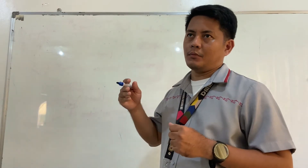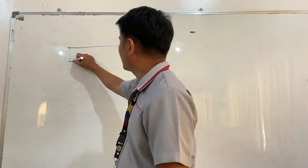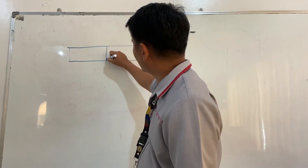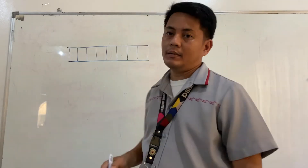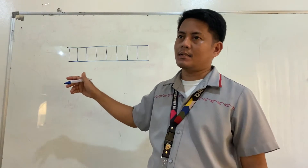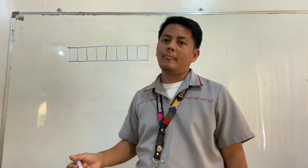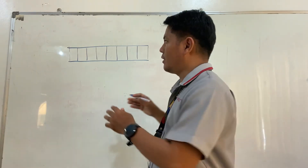Now we are going to demonstrate how to convert a decimal number into its binary equivalent using the short method. I call this the box method — we draw a box and divide it into 8 equal parts. The number of boxes can be extended further; the higher the number to convert, the longer the box will be.